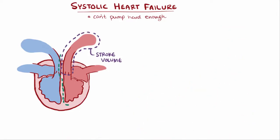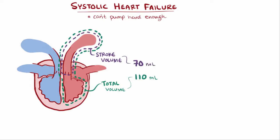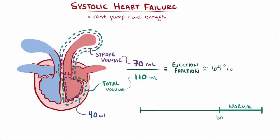Notice that not all of the blood was pumped out — the stroke volume is only a fraction of the total volume. The total volume might be closer to 110 milliliters, and 70 milliliters is the fraction ejected out with each beat. The other 40 milliliters lingers in the left ventricle until the next beat. In this example, the ejection fraction would be 70 milliliters divided by 110 milliliters, or about 64%. A normal ejection fraction is around 50–70%, between 40–50% would be considered borderline, and anything 40% or less would indicate systolic heart failure.